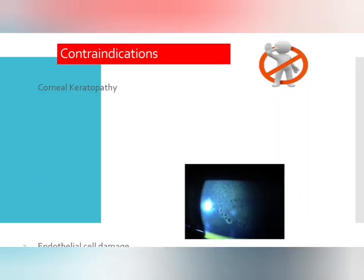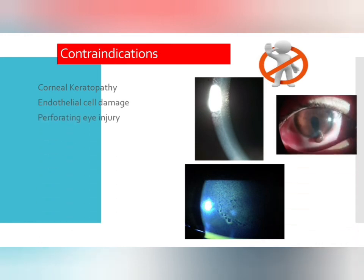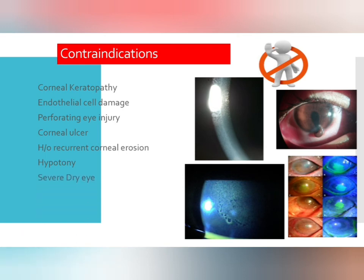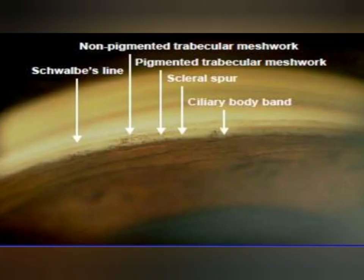Contraindications: if there is corneal infection, do not perform gonioscopy — such as corneal keratopathy, endothelial cell damage, perforating eye injury, corneal ulcer, presence of epithelial defect, or recurrent corneal erosion. In hypotony, avoid gonioscopy because there is a chance of retinal detachment. Also avoid in severe dry eye, conjunctivitis, and hyphema.